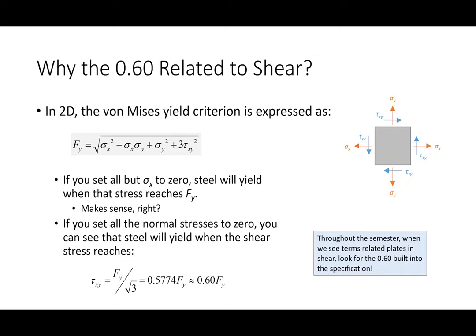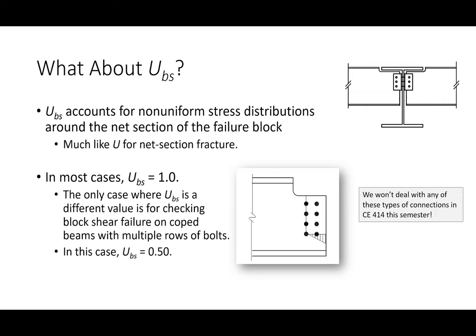Whenever you open the specification and see something related to shear, there's probably a 0.6 in there somewhere — either baked into values or written explicitly. Whenever you see that 0.6, it is always associated with shear. It is not a factor of safety. A factor of safety would be built on top of this. What I'm saying is: if you yank a piece of steel, it fails when it hits FY. But if you shear a piece of steel, it fails when the stress hits about 0.6 of FY. This is a reflection of real-world behavior, not a safety factor.